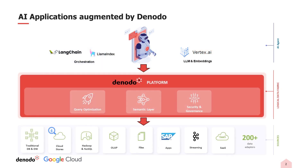Nevertheless, the application of RAG in enterprise settings poses its own set of challenges. This complexity is amplified when the need arises to access enterprise data in real-time, be it to fetch the latest account balances or track a package's location. In large organizations, crucial data is often dispersed across myriad systems, each requiring specific protocols and security measures for access.